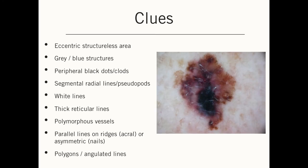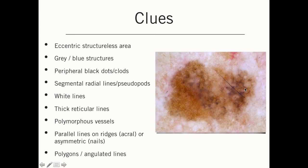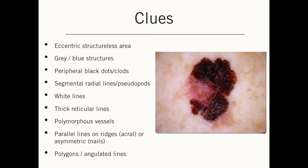First: an eccentric structureless area. Here we have an eccentric dark black-to-blue area, and because it is not in the center but eccentric, it counts as a clue. Next, gray structures — any structure that is gray can be a clue to malignancy, but especially gray circles on the face are an important clue.